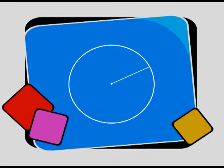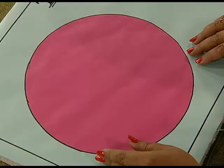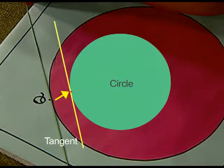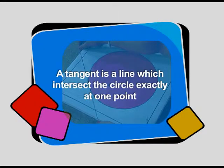To begin with, let us take a circle of convenient radius. We have a circle here. Now, what is a tangent? A tangent is a line which intersects the circle exactly at one point.